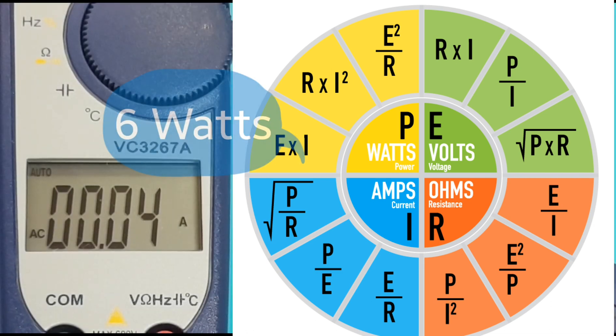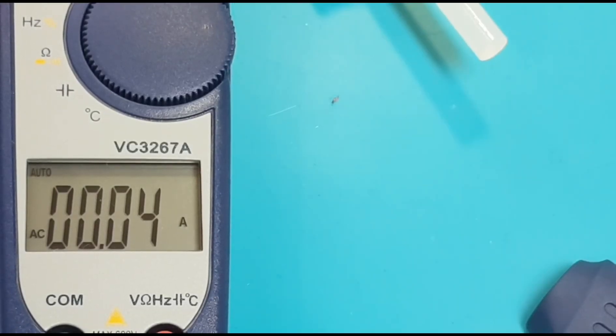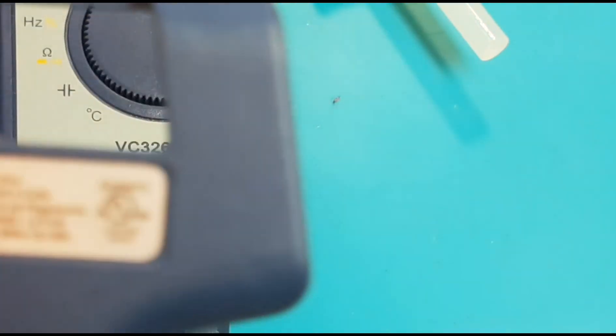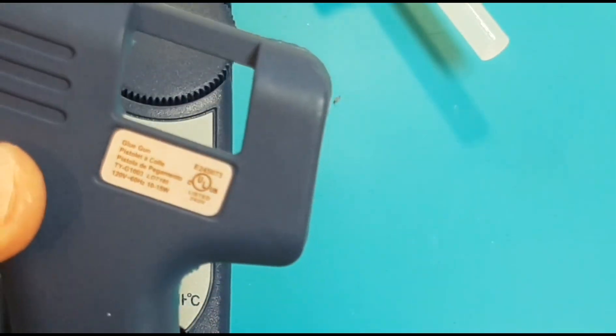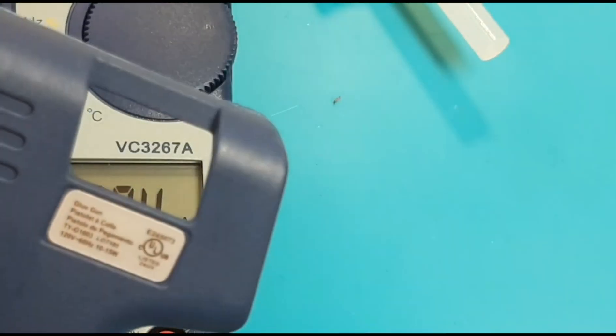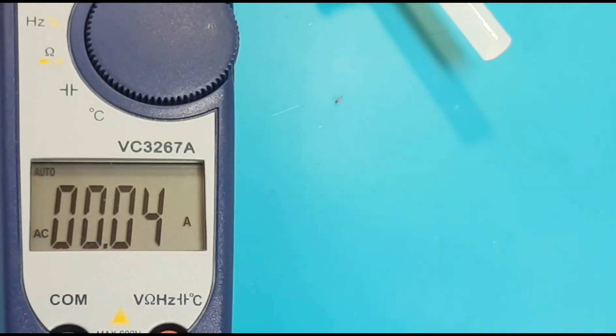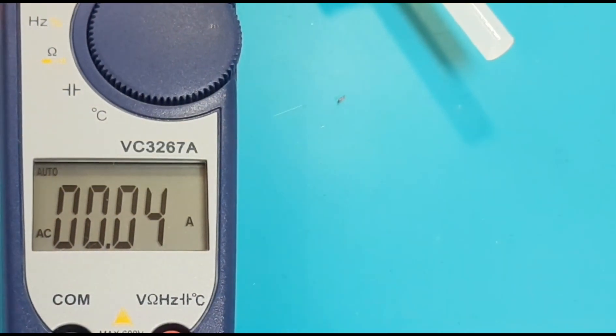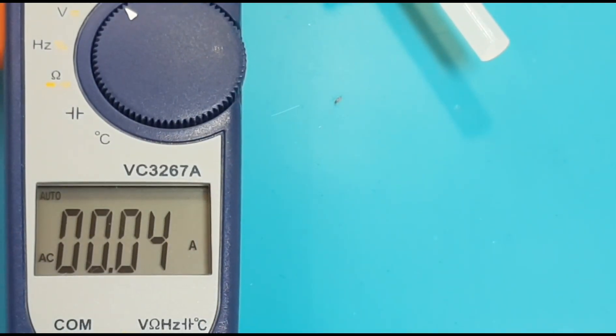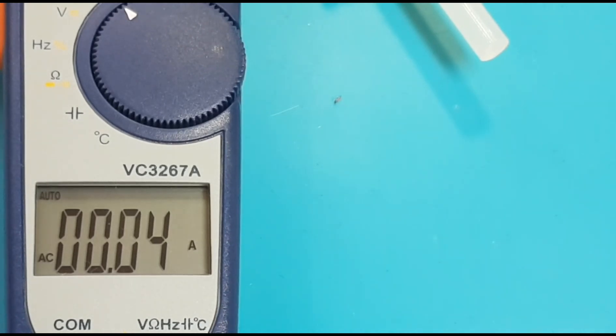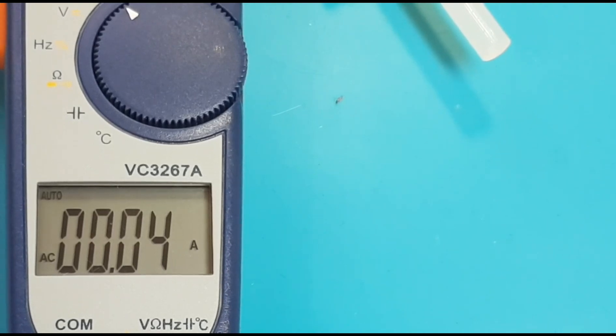So six watts are actually being utilized or generated by this mini glue gun. So it's actually better than what they're indicating on the device itself here. They're saying it'll utilize between 10 and 15 watts, so it's literally half that. So yeah, in terms of overall power consumption, this is a pretty low power glue gun. So that's just one way that you can utilize Ohm's law in this case and your clamp meter to give you some sort of an indicator in terms of energy flow.